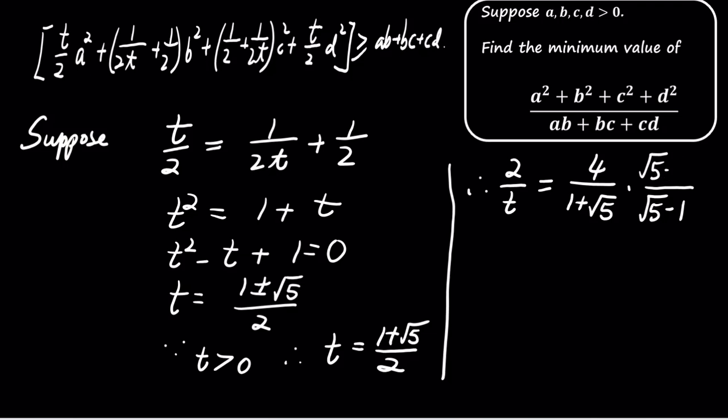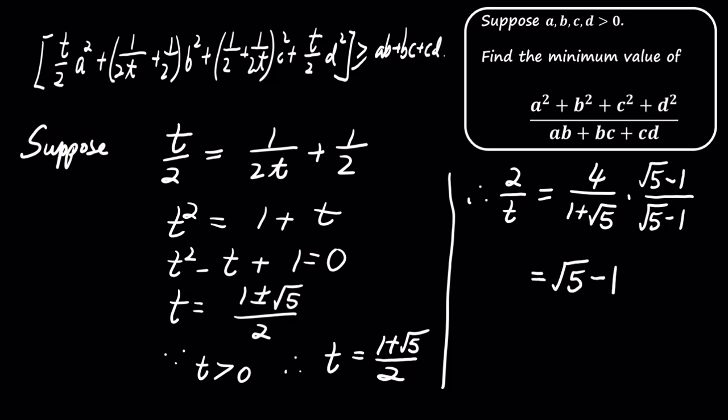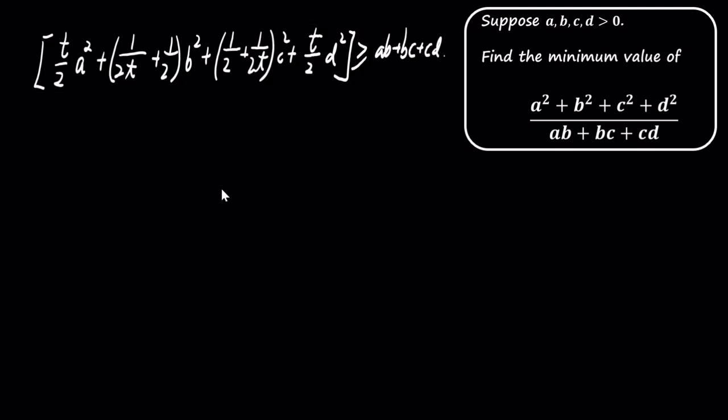This means that 2 over t is square root of 5 minus 1. Substituting this value of t back into our inequality, we find that...